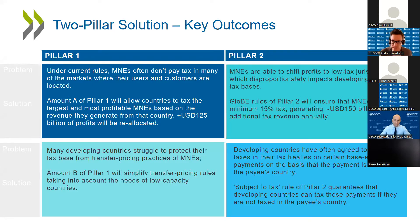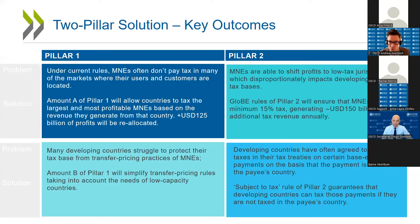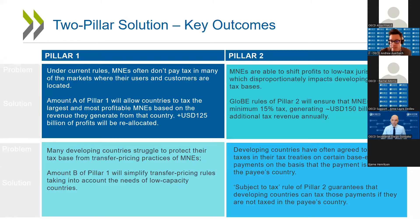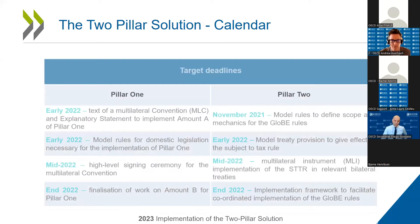On Pillar 2, there are two pieces. First, the GloBE rules — the minimum tax of 15% — which we believe will generate around 150 billion US dollars in additional tax revenue. So Pillar 1 involves profit reallocation, while the 150 billion is additional tax revenue, which is significant. There is also a Subject to Tax Rule, which is very important for developing countries. Where they have given up their right to tax certain payments like interest or royalties — agreeing to a low withholding rate in their treaties on the assumption those payments are taxed in the payee country — but in fact the payee country's tax system doesn't tax that income, the Subject to Tax Rule will allow the developing country to retain those taxing rights.